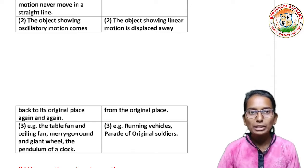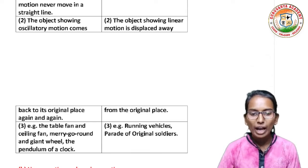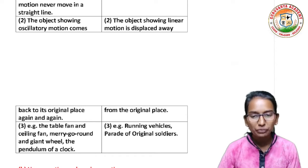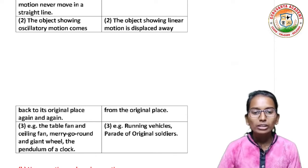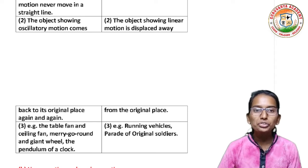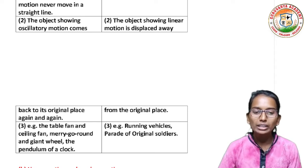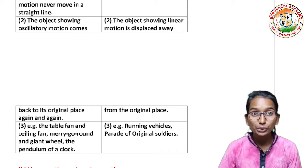Examples of oscillatory motion: the table fan and ceiling fan, merry-go-round and giant wheel, and the pendulum of a clock. Examples of linear motion: running vehicles and the parade of soldiers.